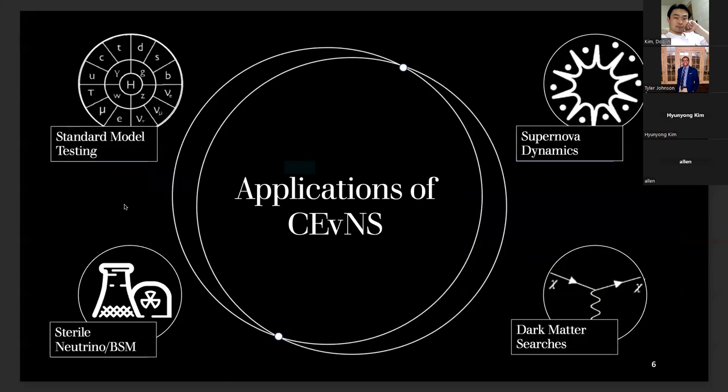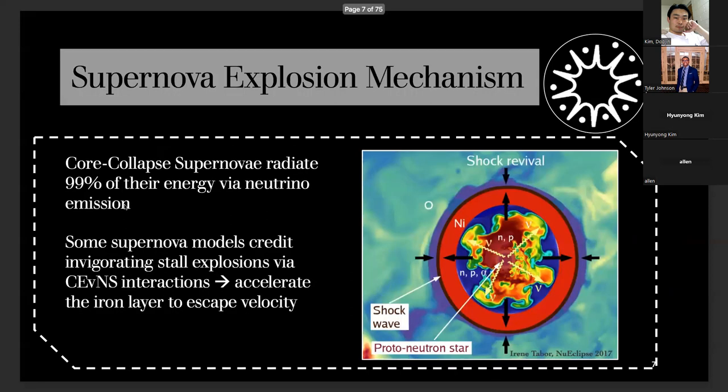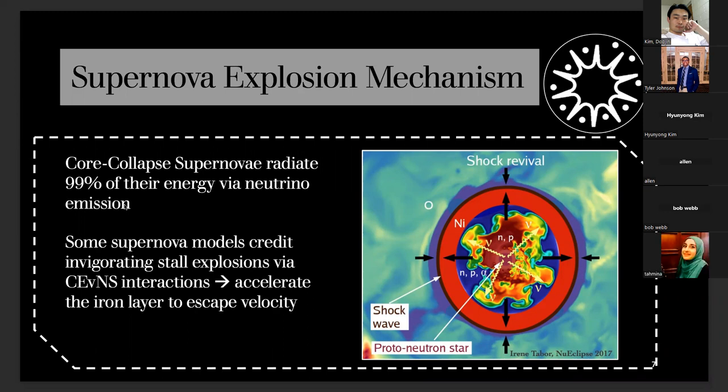When you take a 30 MeV neutrino and throw it against a germanium nucleus, there's a maximum kinematic recoil energy that nucleus can have, in this case it is 25 keV. That's quite small compared to a lot of detecting systems thresholds, especially since you want larger detectors because neutrinos interact rarely. Even though the cross section is quite high by neutrino standards, it still is pretty difficult because you're looking for the slight wobble of a nucleus.